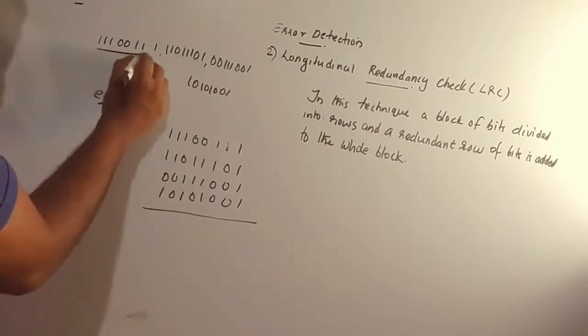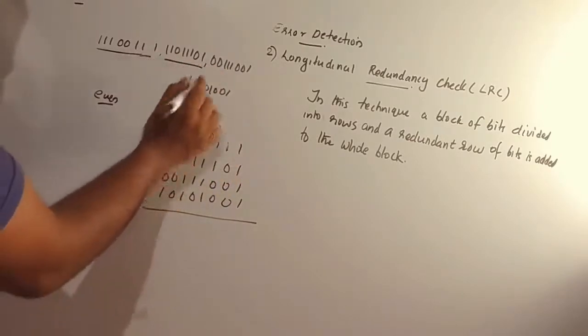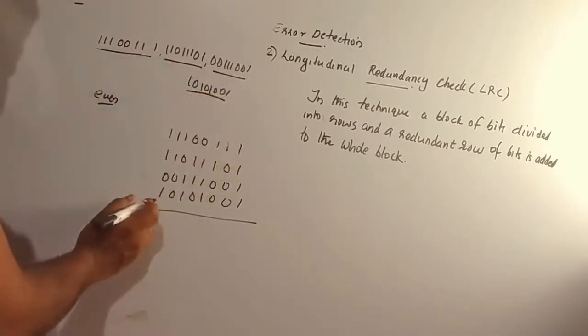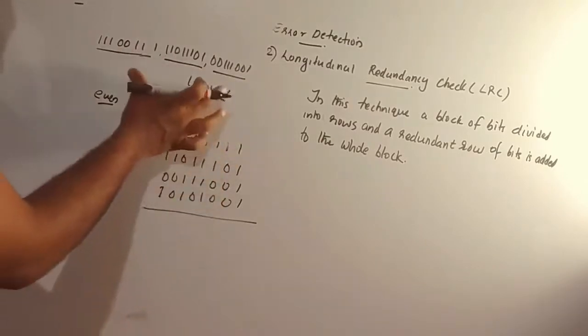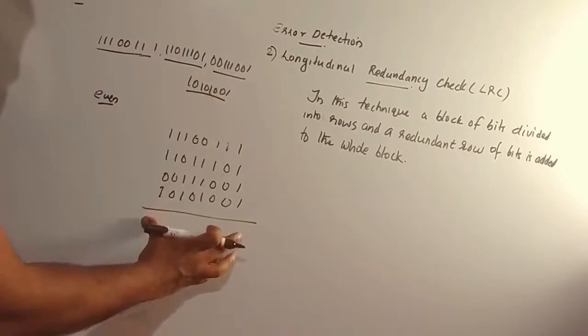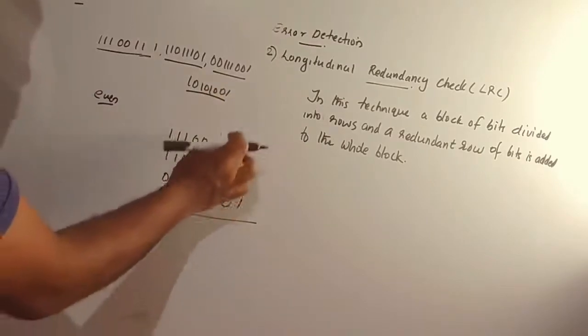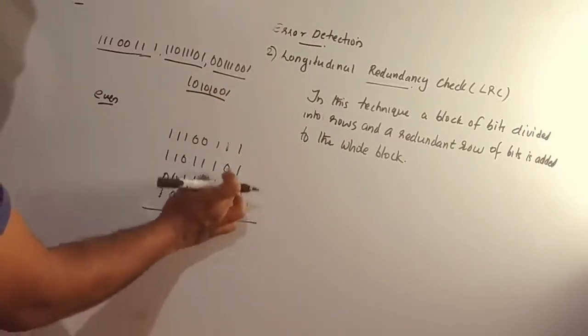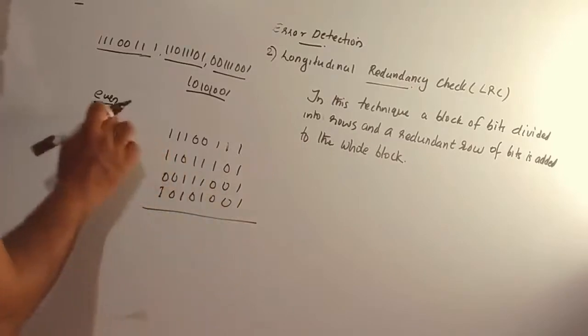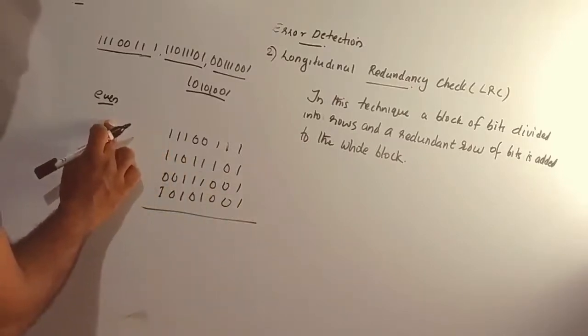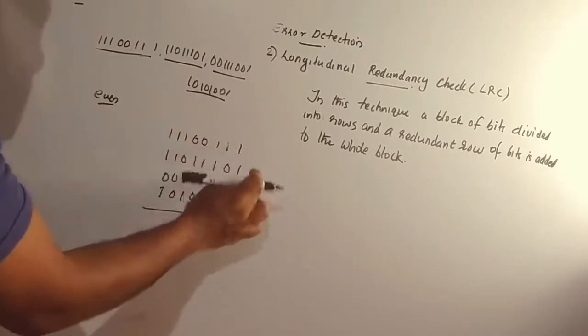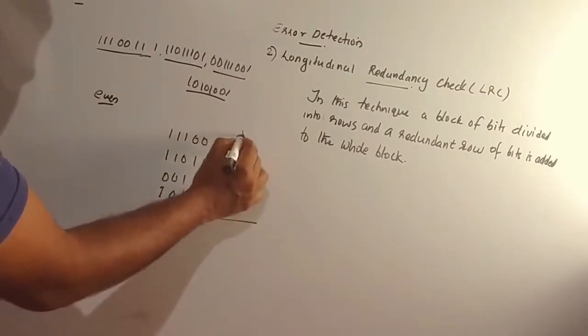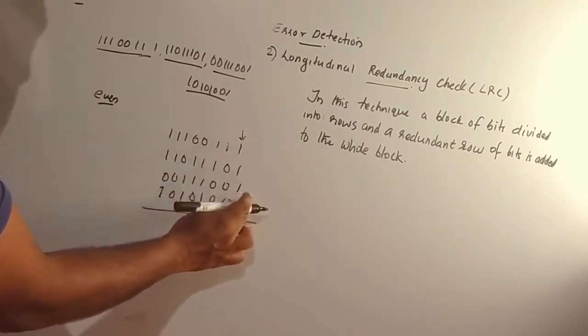We arrange the data as 8-bit blocks. Each row has 8 bits, and we arrange multiple rows of 8-bit data. Then another row will be the parity bit. It will be even parity. We count the number of ones in each column.